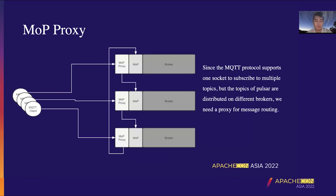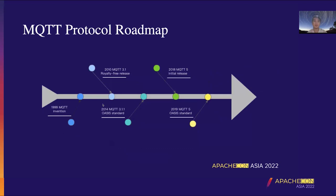Now that we have briefly introduced MOP, we will introduce the MQTT 5 protocol and some of its new features. From these slides, we can witness the release history of the MQTT protocol. The MQTT protocol was originally invented by IBM in the 1990s.